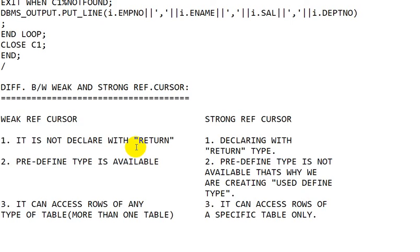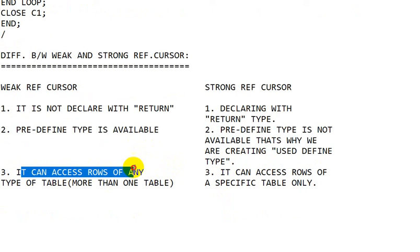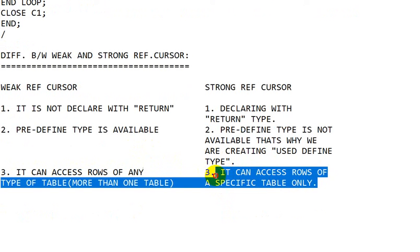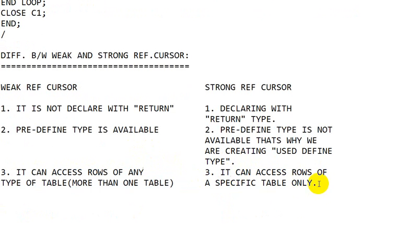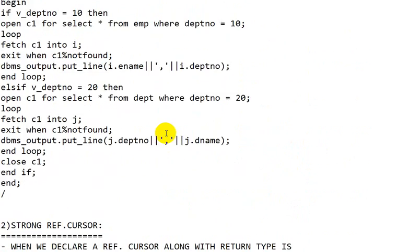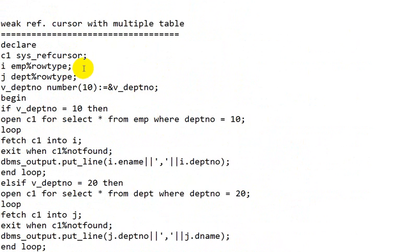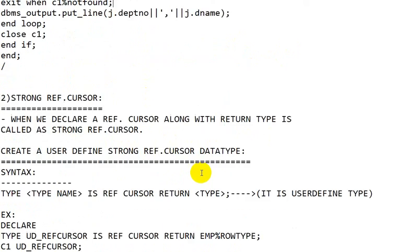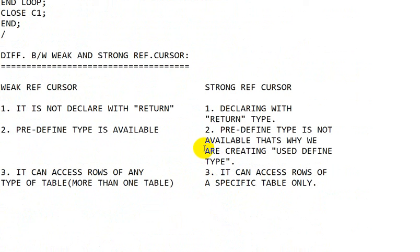The third difference is that a weak REF CURSOR can access rows from any number and any type of table — meaning more than one table. But a strong REF CURSOR can access rows from a specific table only, meaning only a single table. In the weak REF CURSOR example, we can see data being accessed from multiple tables — here from the employee table, and here from the department table. So these are the three main differences between the weak REF CURSOR and strong REF CURSOR.